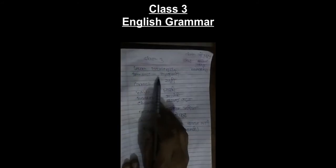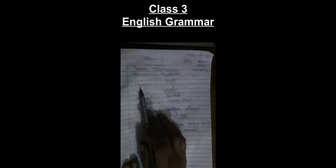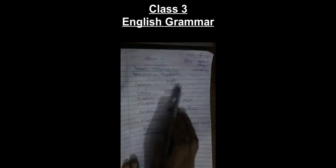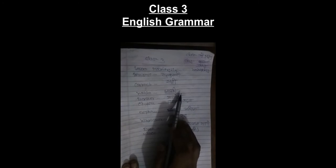Princess - Rajkumari, correct - C-O-R-R-E-C-T, correct - Sahi, while - Jab Ki.